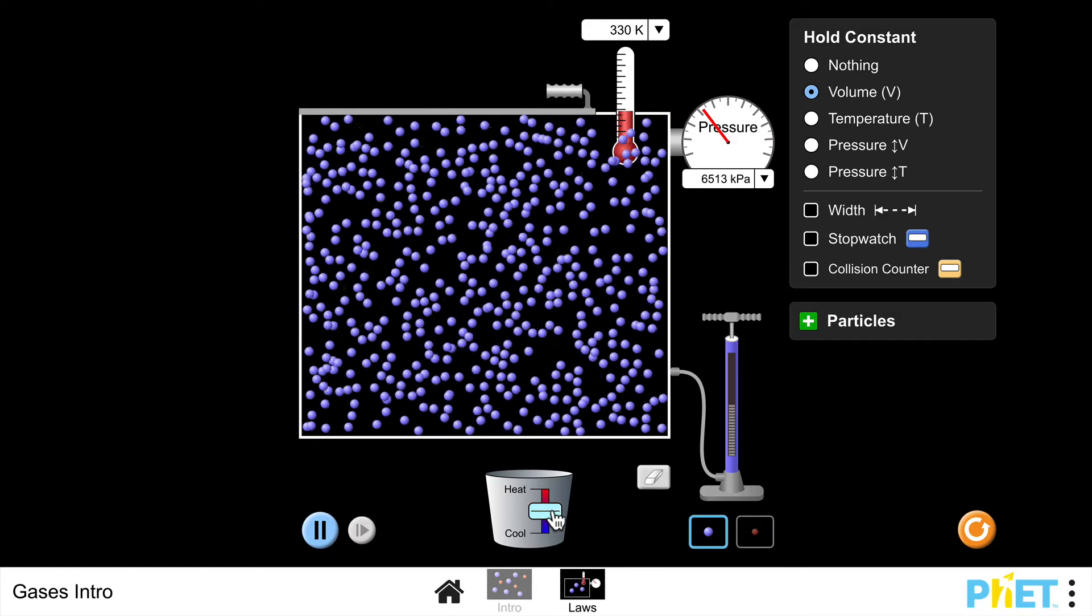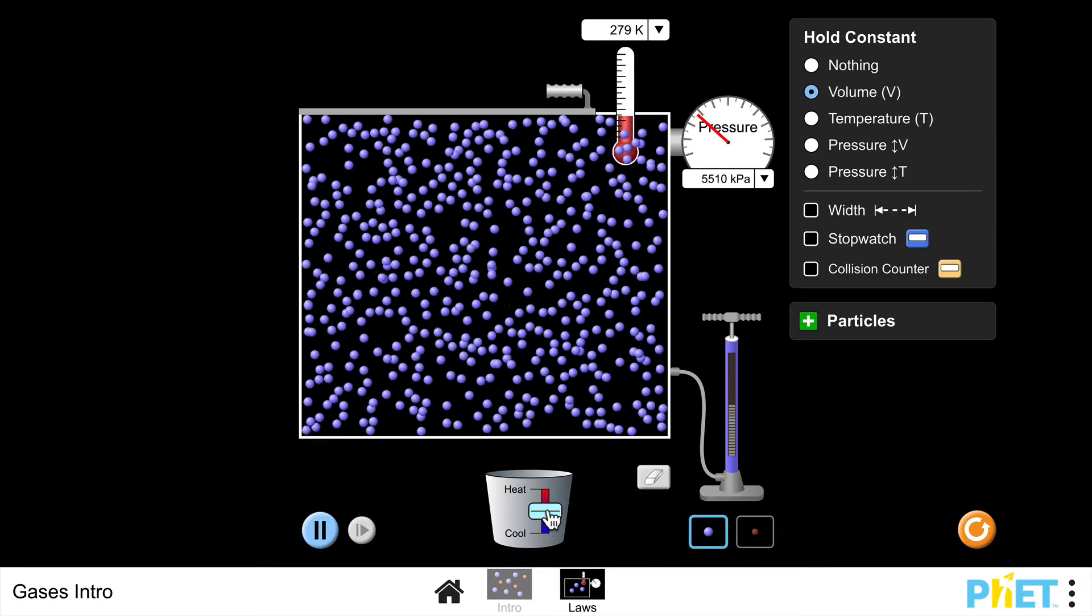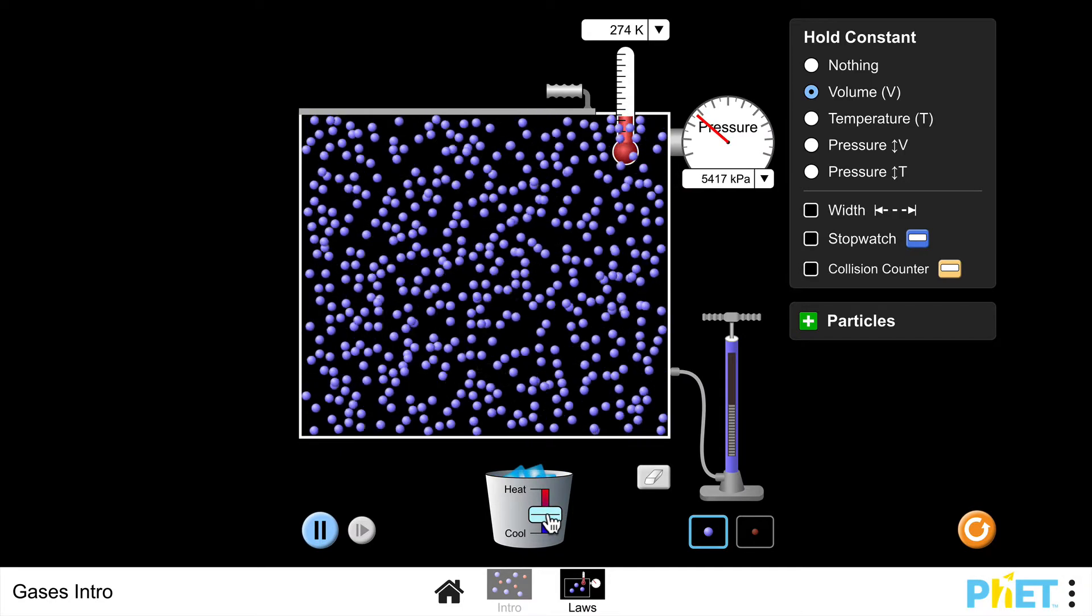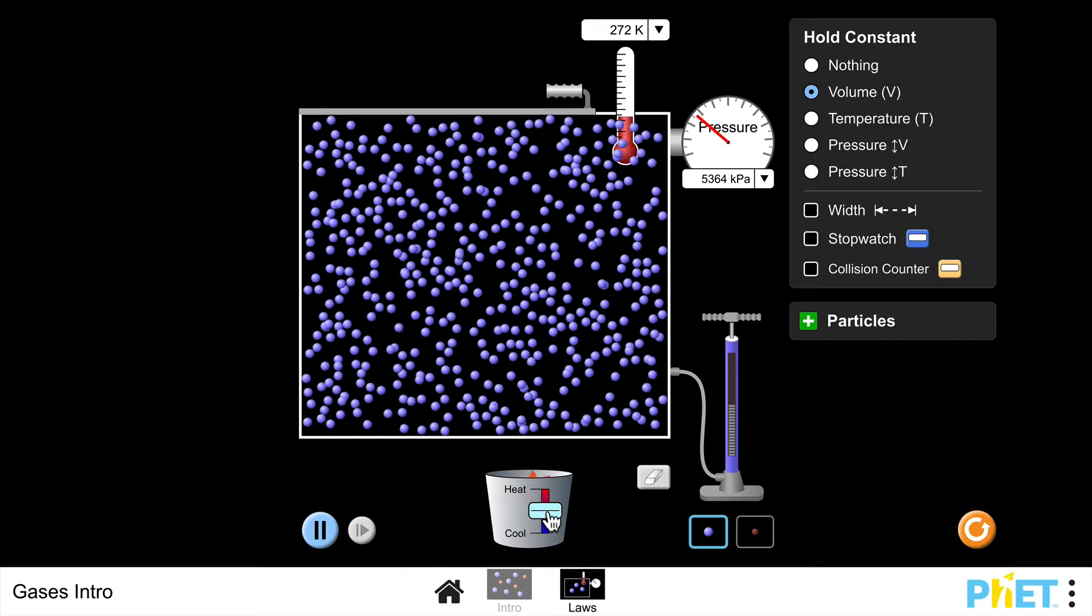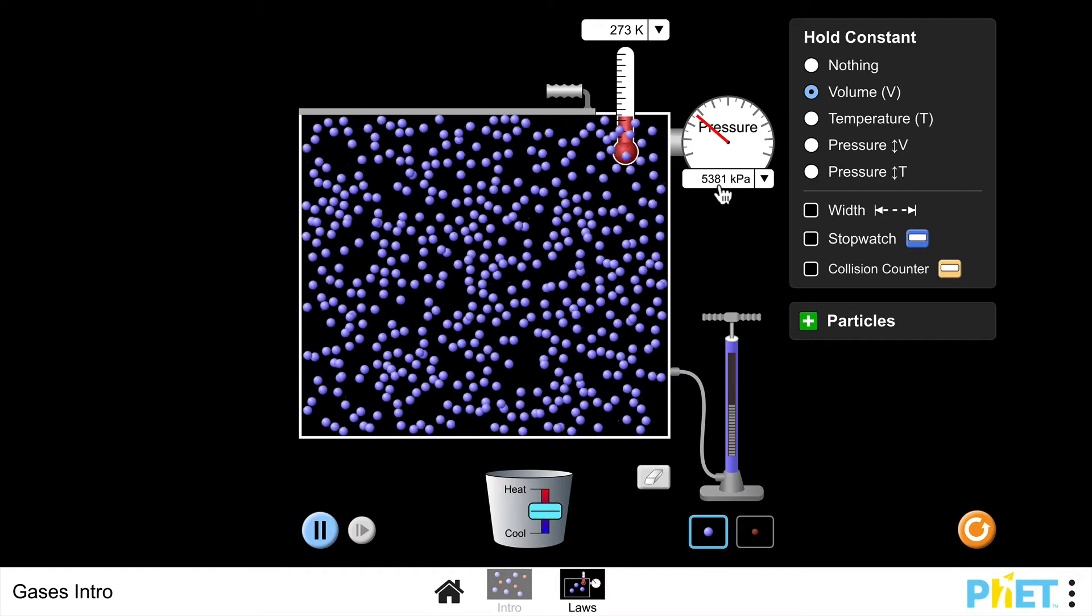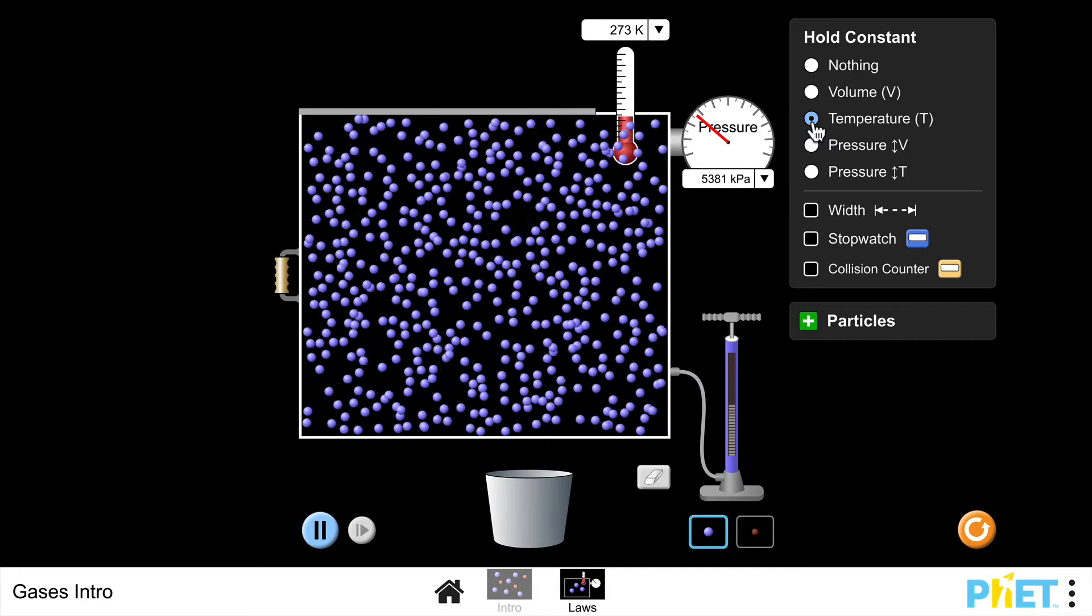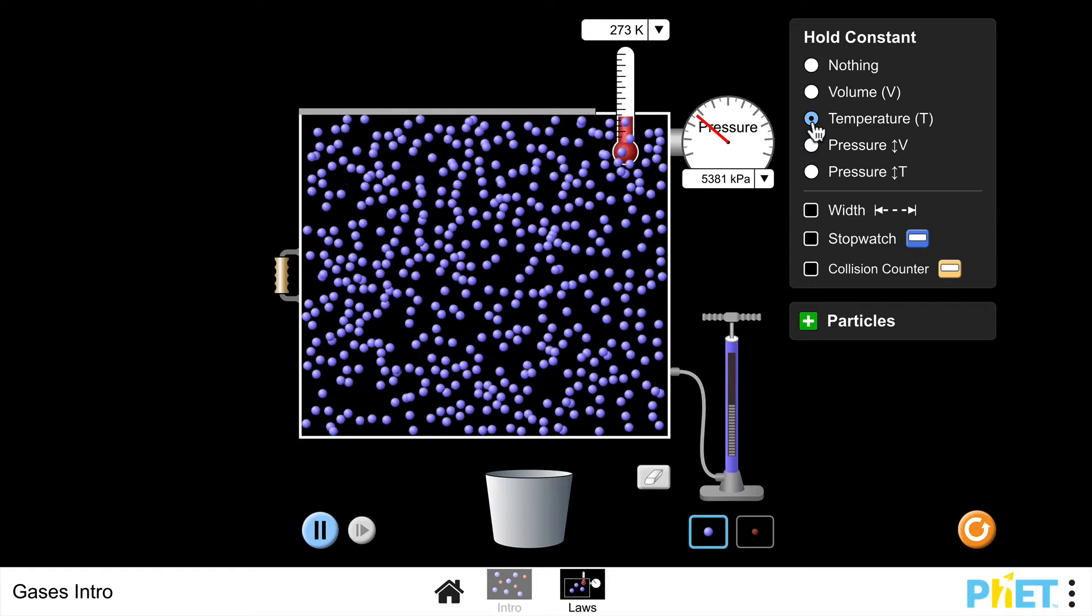Now, the second thing I could do, I'm going to go back to that temperature of 273 again if I can, and I'm going to look at another relationship. Come on, there we go. So I'm going to keep that temperature at zero, I'm going to keep that constant, and I'm going to look at the relationship between pressure and volume.